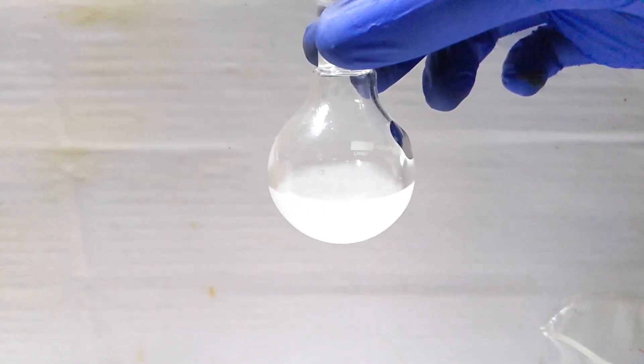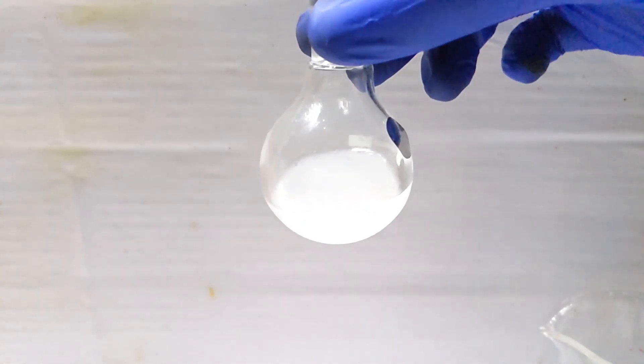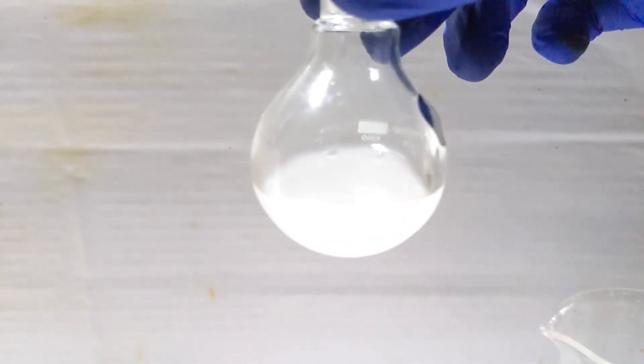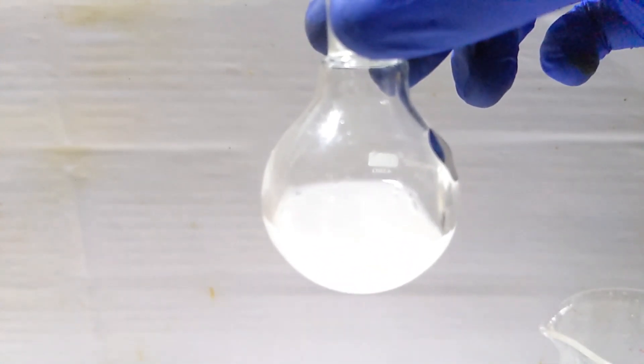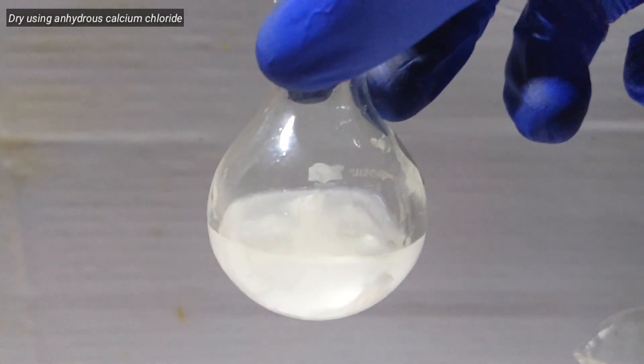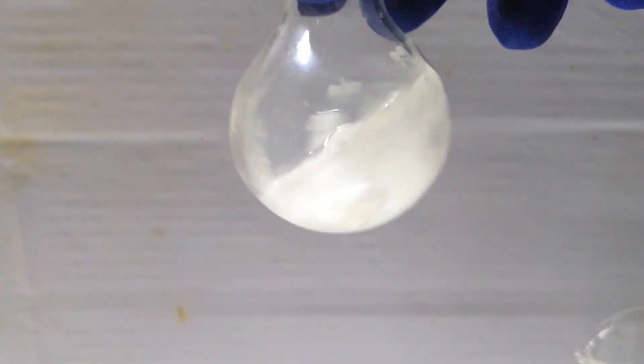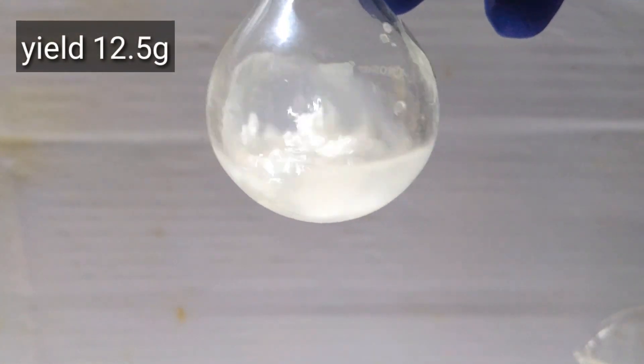The water present in bromobenzene can be removed by drying it by adding a few grams of anhydrous calcium chloride to it. The final yield of bromobenzene after drying was about 12.5 grams, which is a pretty decent yield.